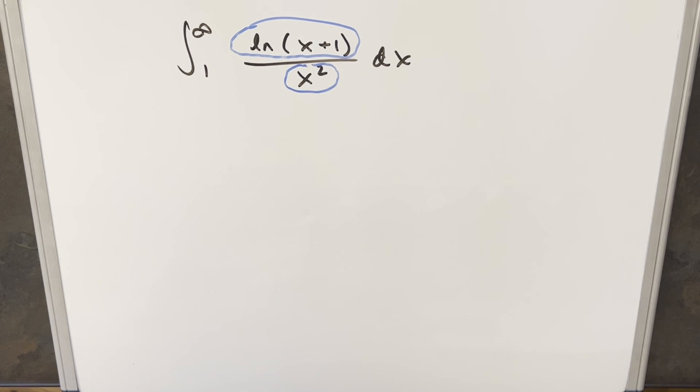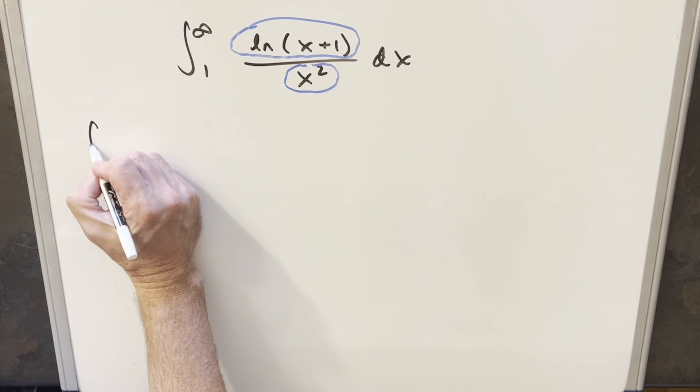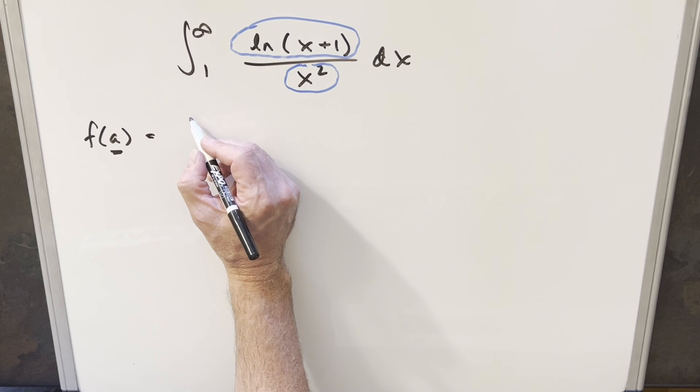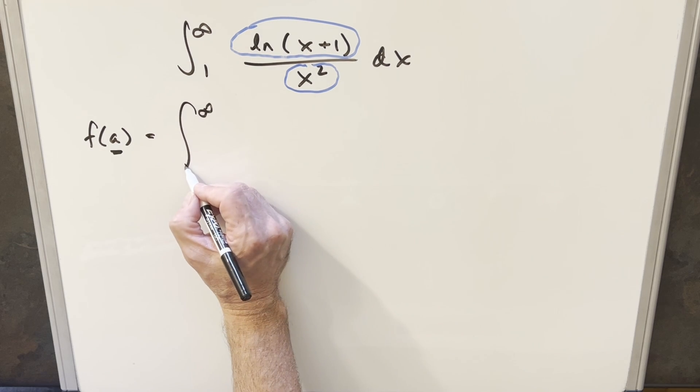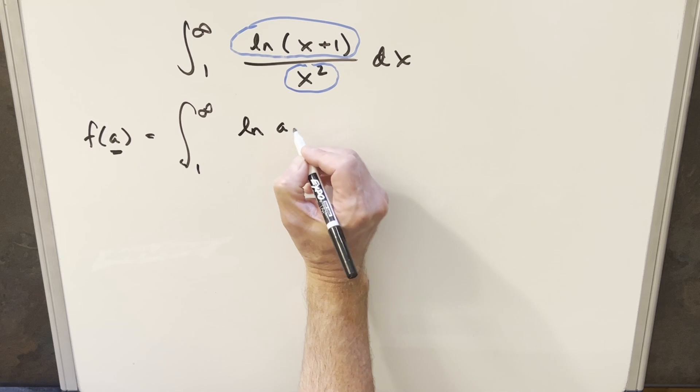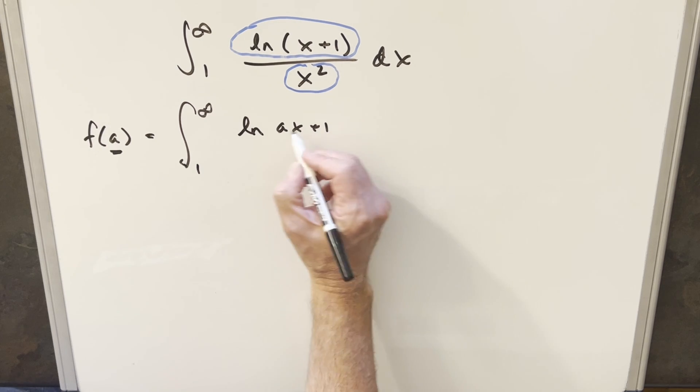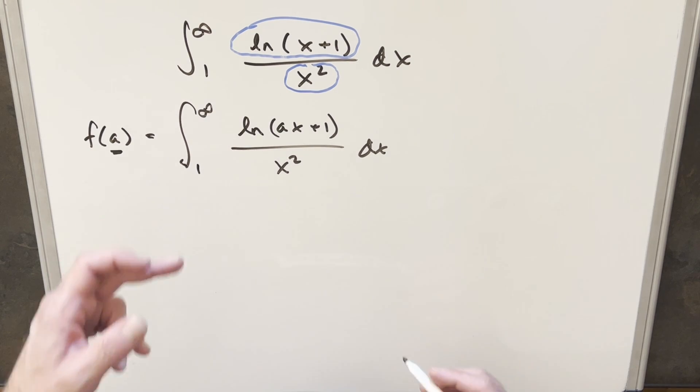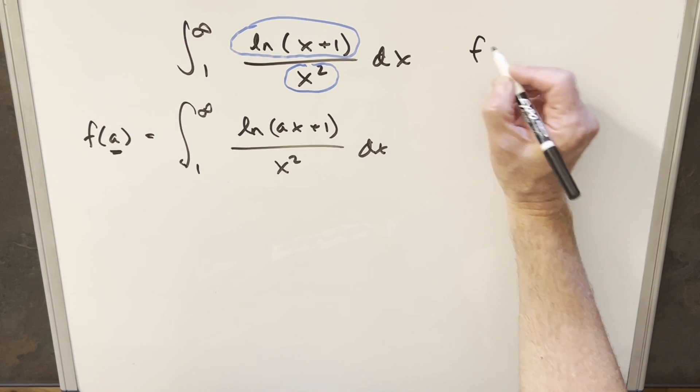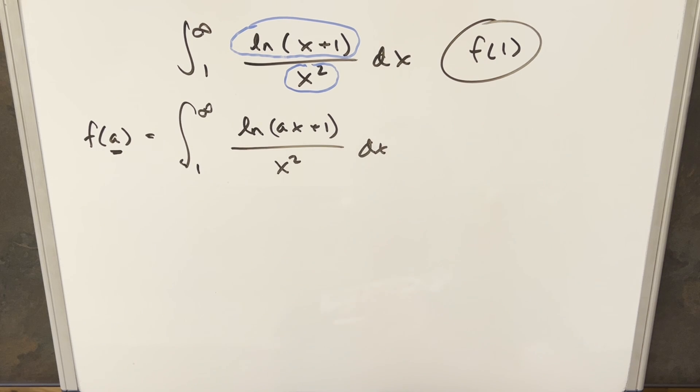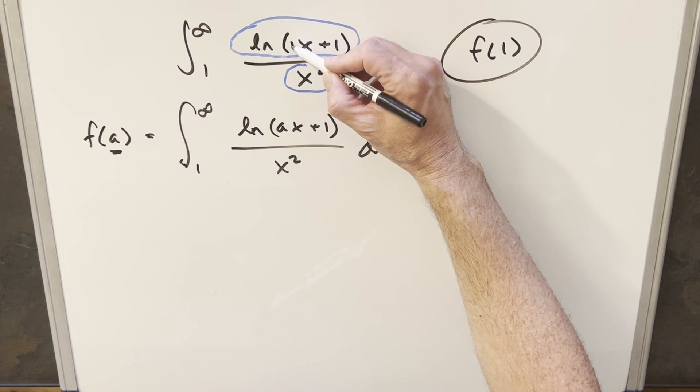So what I want to do is create another expression with a parameter. I'm going to create some function f of a, creating this new variable a. Let's just rewrite this thing. I'm going to create the parameter on the x, so we're going to turn this into ax plus 1 over x squared dx. When a is 1, it's going to be the same as our original problem. So our goal is getting back to this f of 1 value.